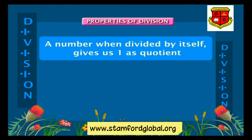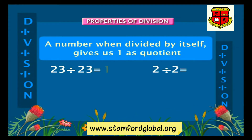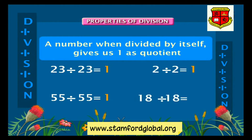Property two: division of a number by itself. A number when divided by itself gives one as the quotient. For example, twenty-three divided by twenty-three is equal to one, two divided by two is equal to one, fifty-five divided by fifty-five is equal to one, eighteen divided by eighteen is equal to one, and so on.